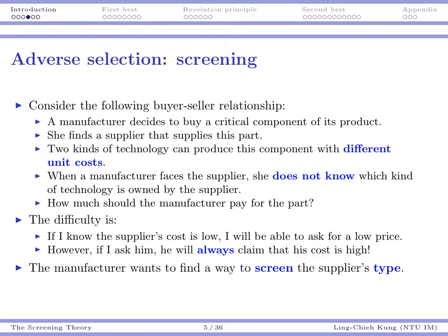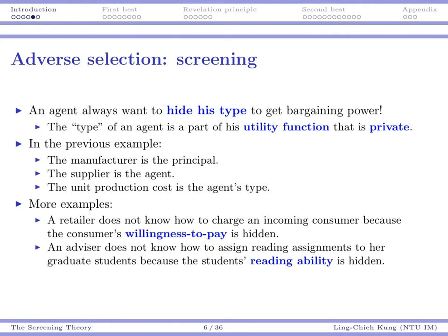Because of this, the manufacturer faces a bargaining power issue. If the manufacturer really knows the production cost, it is at a great advantage in bargaining for price. Since it does not know, the manufacturer will want to find a way to screen the supplier's type — screening basically means learning the supplier's type. If the manufacturer can know the supplier's type, it has more bargaining power and expects to earn more. The agent will always try to hide its type — that type is the piece of private information that appears in the agent's utility function.